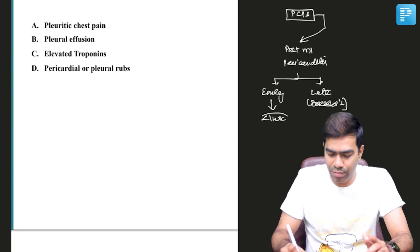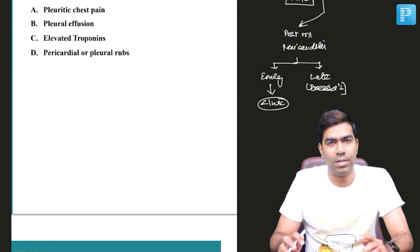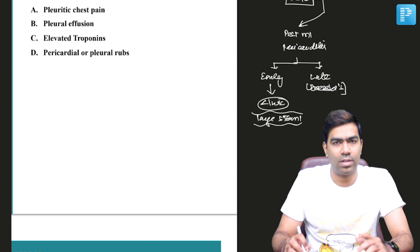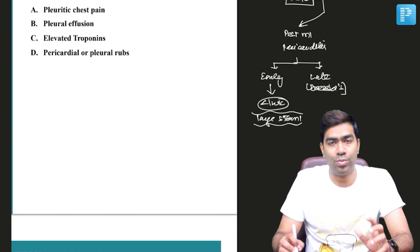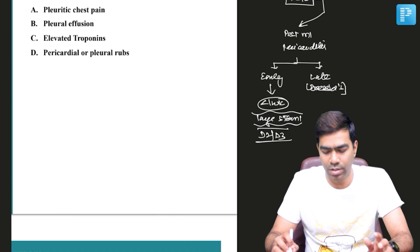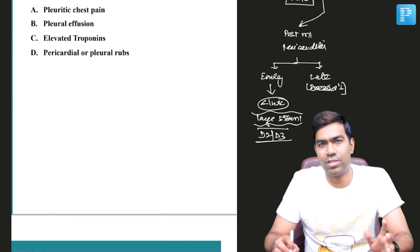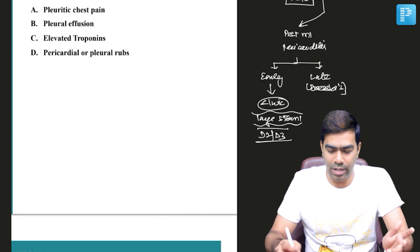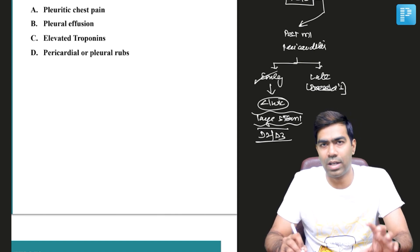Early post-MI pericarditis typically happens in the first week after STEMI. It usually happens after a very large or massive STEMI. Generally, it tends to present around day 2 or day 3 itself, very early in the course. Treatment is just going to be aspirin - just increase the dose of aspirin that the patient is already getting.